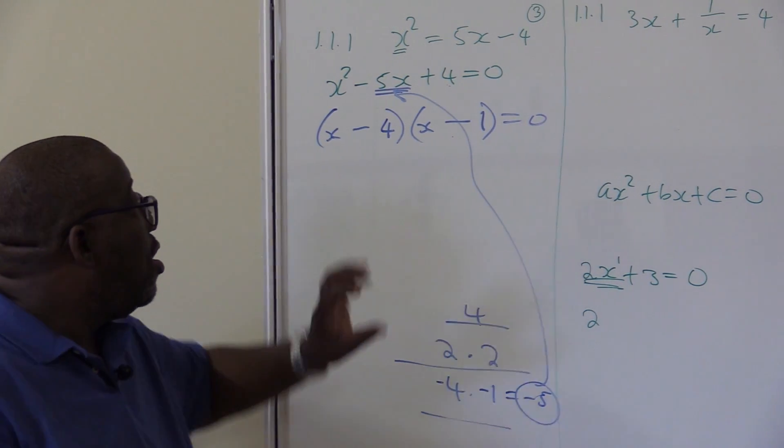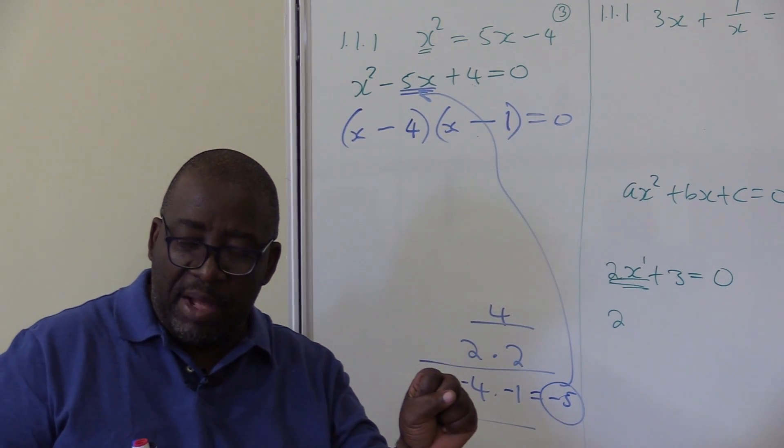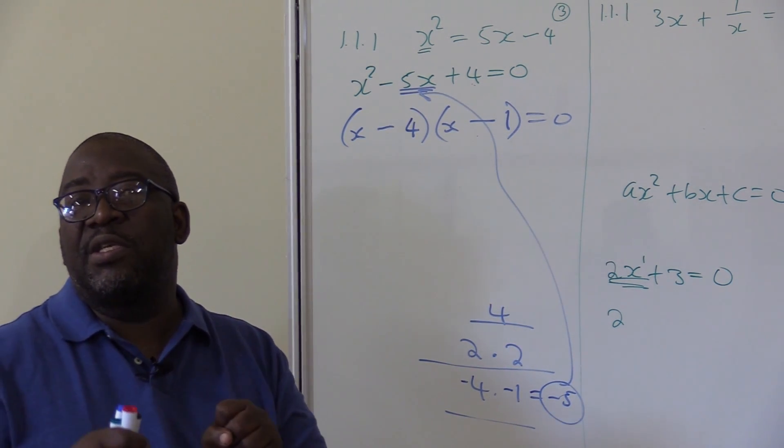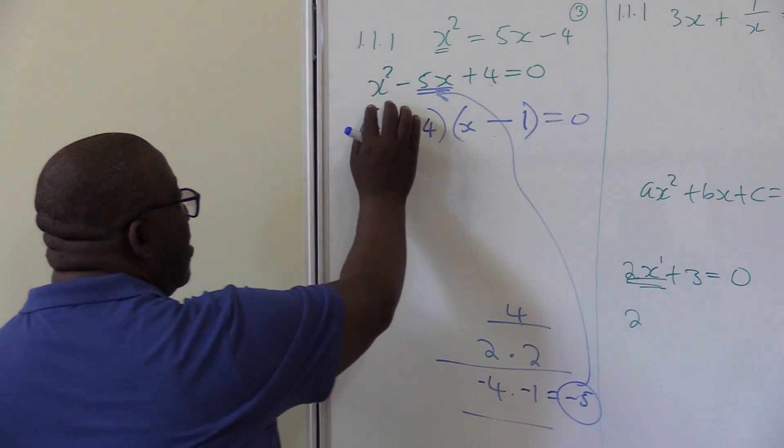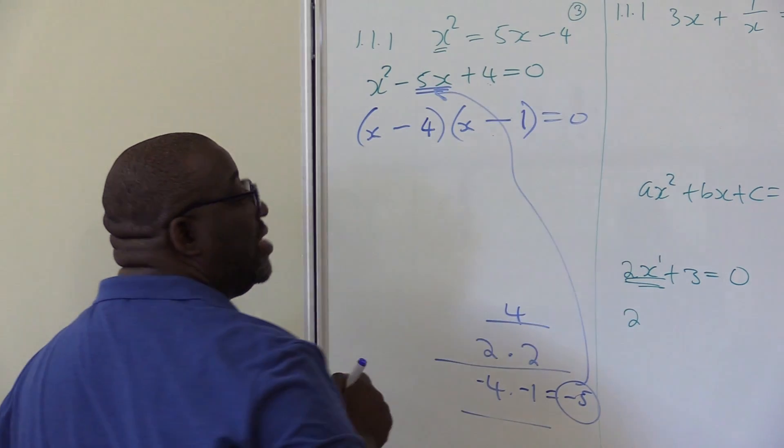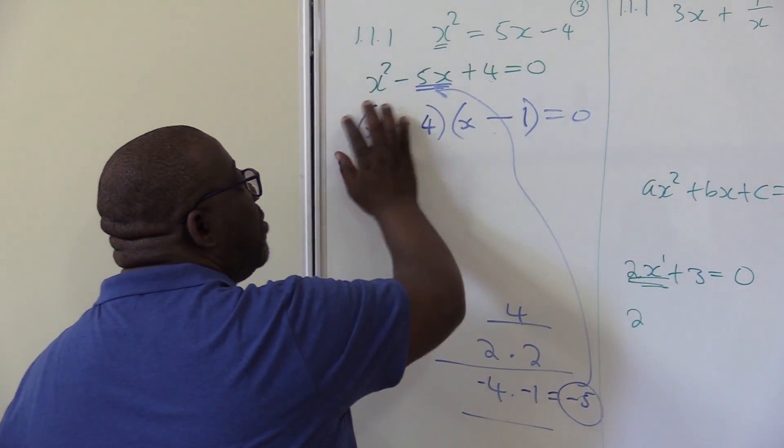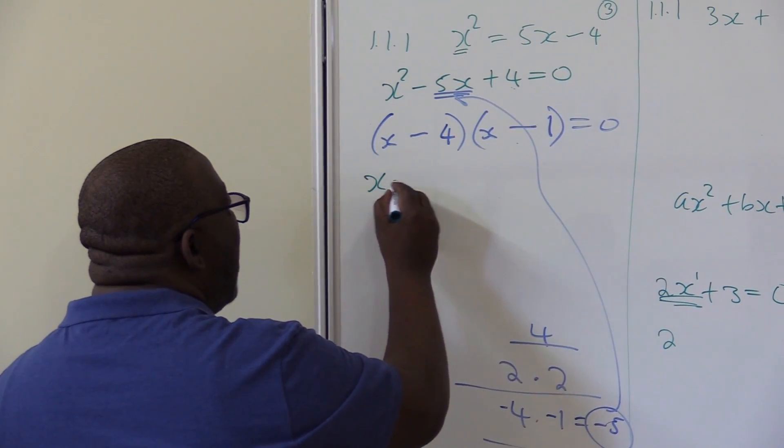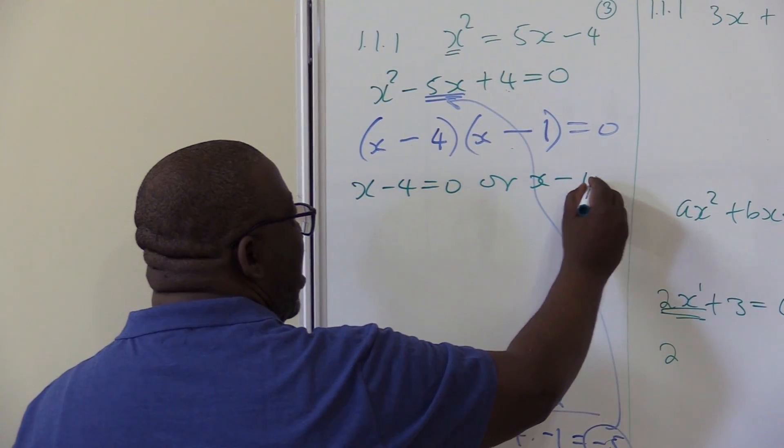Remember we are multiplying here. We are multiplying two numbers and getting zero. When you multiply a certain number times a certain number and you get zero, definitely one of these numbers must be zero because zero multiplied by anything gives you zero. So when you multiply this one and that one you are getting zero, so this one can be zero or that one can be zero. That's where the 'or' comes from.